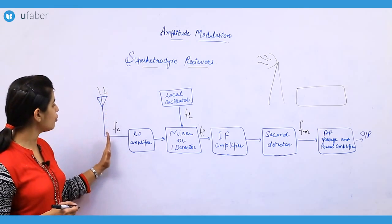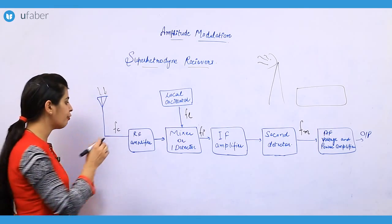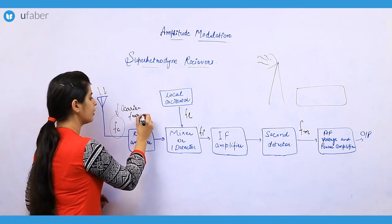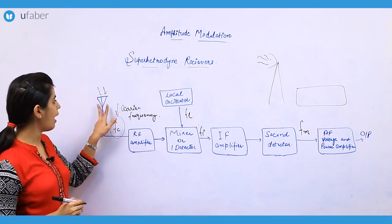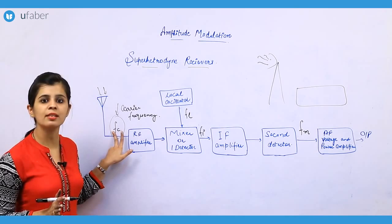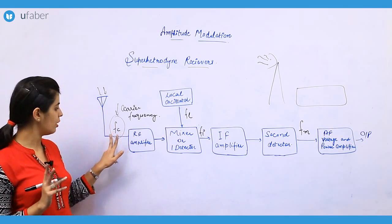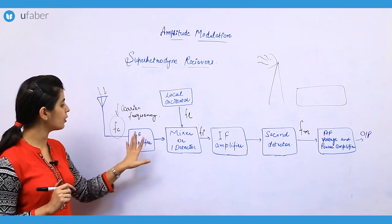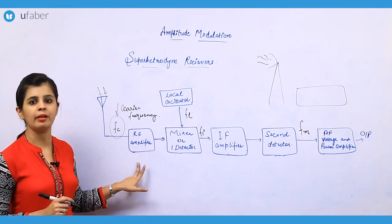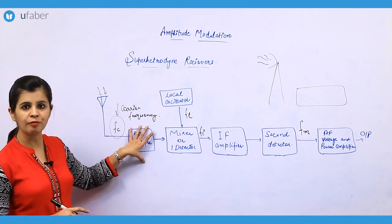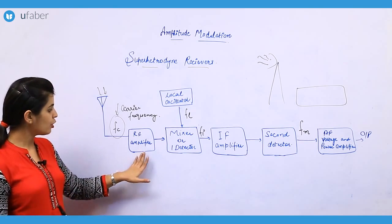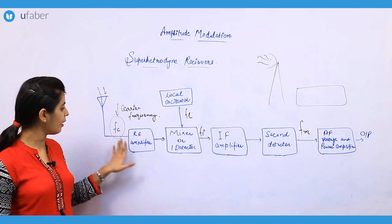The signal received from the antenna is at the frequency known as the carrier frequency. As you know, you are getting a modulated signal at the receiving antenna, so the modulated signal's frequency would be equal to the carrier frequency. This signal is amplified by using an RF amplifier at the first stage. At the first stage, you have to first amplify the signal that you have received, so this RF amplifier is being used to amplify the signal.